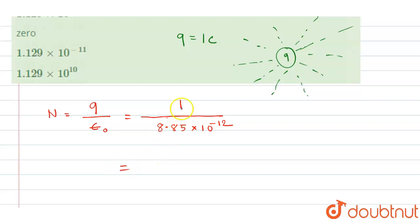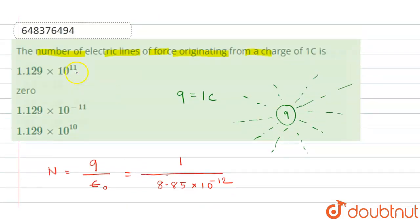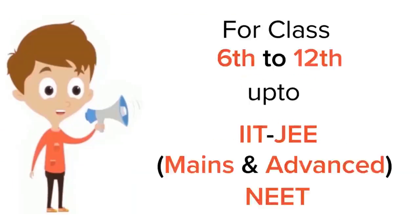So 1 divided by 8.85 equals 0.1129, multiplied by 10¹², which gives 1.129 × 10¹¹. So the first option is the correct option. Thank you.